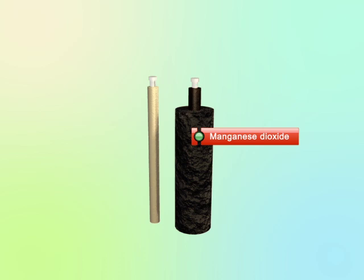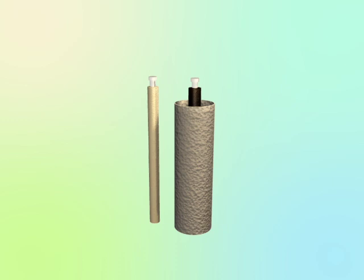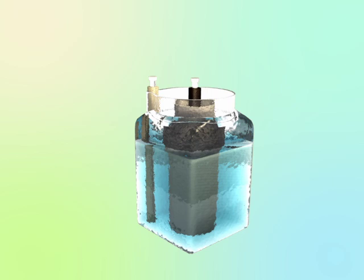A depolarizer of crushed manganese dioxide is placed around the carbon rod. A porous pot holds it in place, but allows the electrolyte, which is ammonium chloride, to get in contact with the depolarizer. To make it more visible, the electrolyte has been colored blue. In the real world, it is colorless.